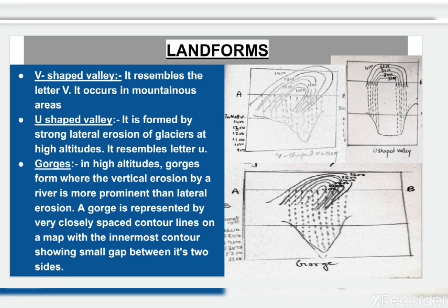Next are V-shaped valleys, U-shaped valleys, and gorges. A V-shaped valley resembles the letter V and occurs in mountainous areas. A U-shaped valley is formed by the strong lateral erosion of glaciers at high altitude and resembles the letter U. A gorge forms at high altitudes where vertical erosion by a river is more prominent than lateral erosion. A gorge is represented by very closely spaced contour lines, with the innermost contour showing a small gap between the two sides.